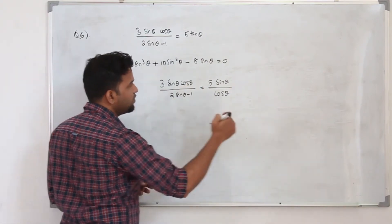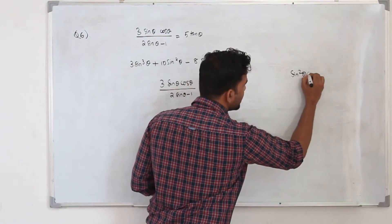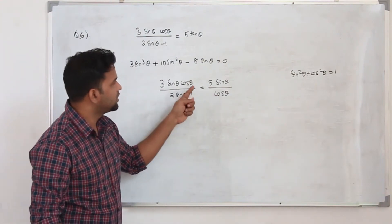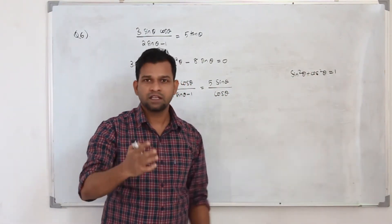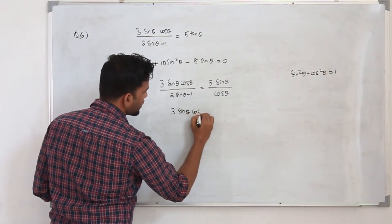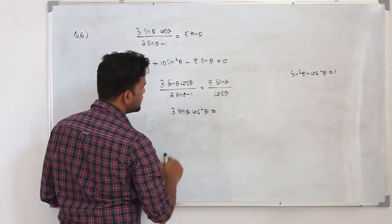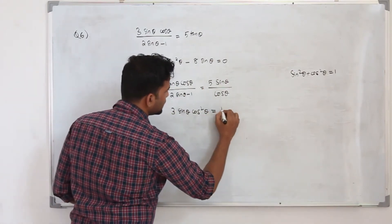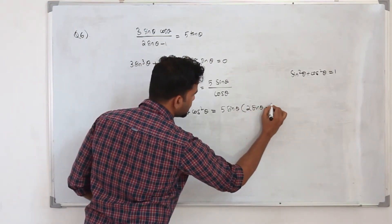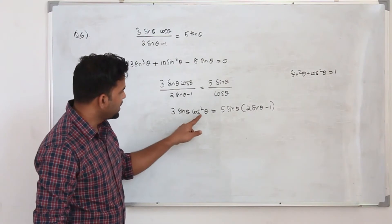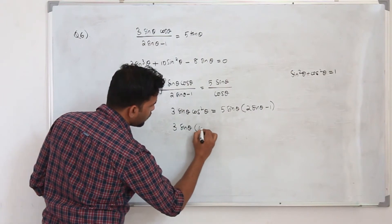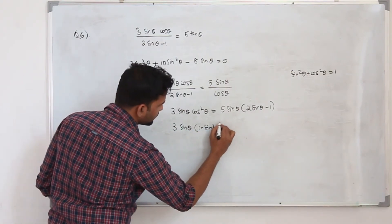When you cross multiply, you get cos²θ on the left side. We know the trigonometric identity sin²θ + cos²θ = 1, so we can replace cos²θ with 1 − sin²θ. After cross multiplying, you have 3 sin θ cos²θ = 5 sin θ(2 sin θ − 1), then replace cos²θ to get 3 sin θ(1 − sin²θ) equals 10 sin²θ − 5 sin θ.